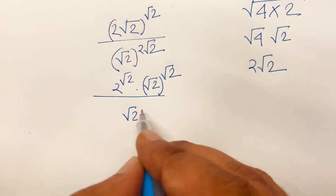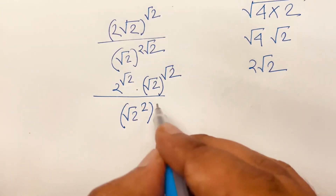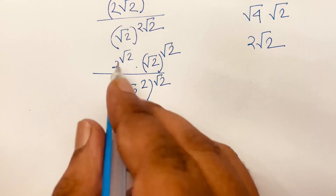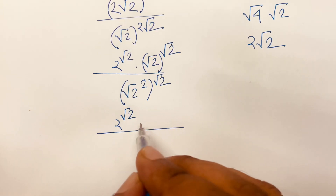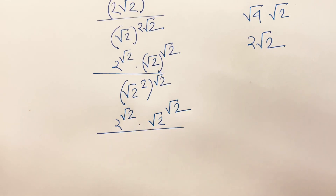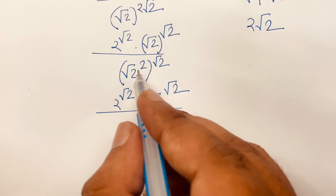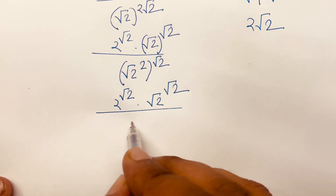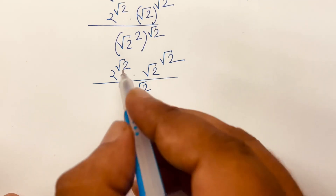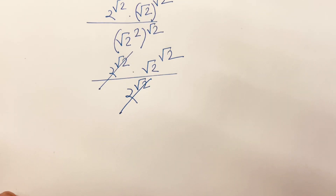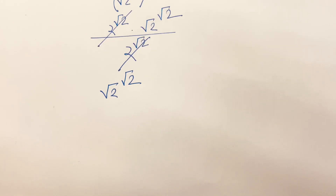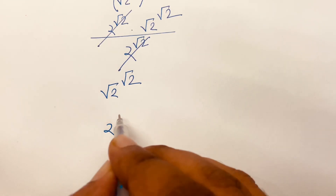So here is 2 to the power square root 2 times square root 2, bracket to the power square root 2. This square root cancels, so it will be 2 to the power square root 2. Then after cancellation we find square root 2 to the power square root 2, which equals 2 to the power one half.